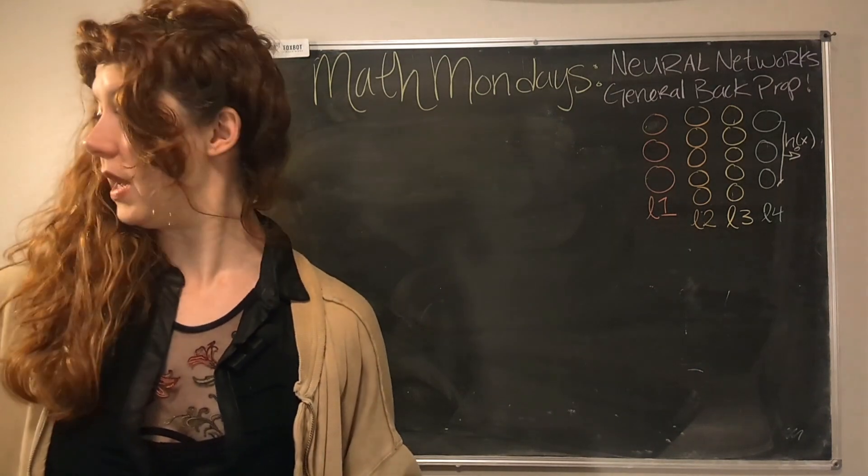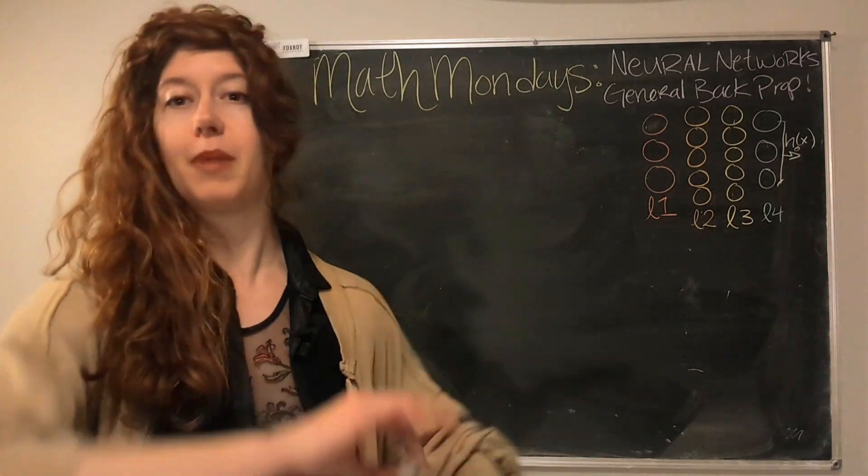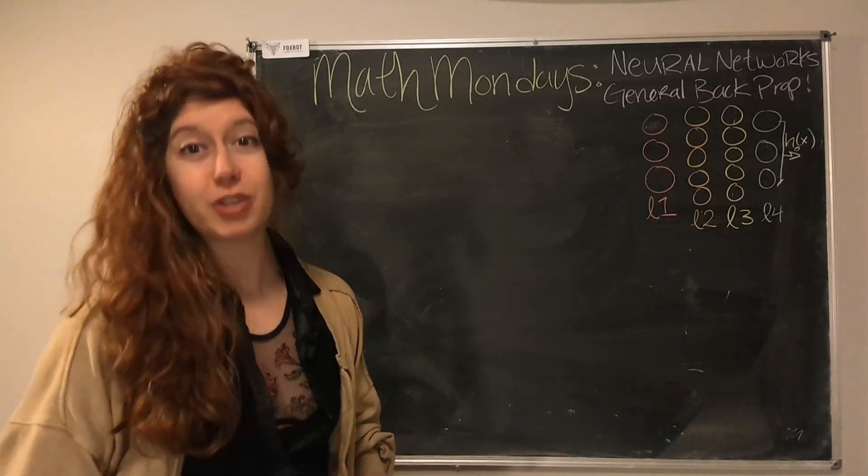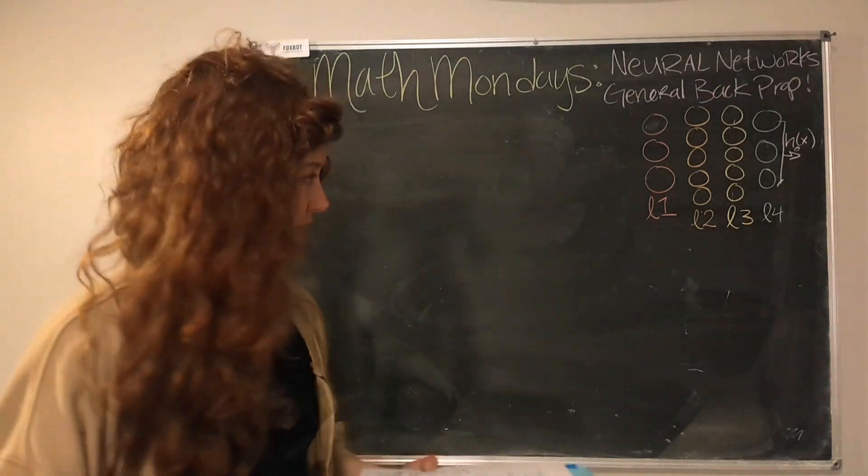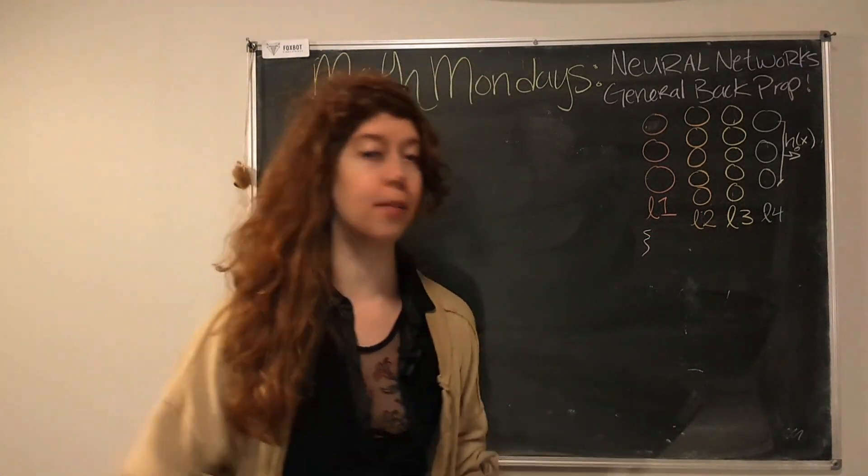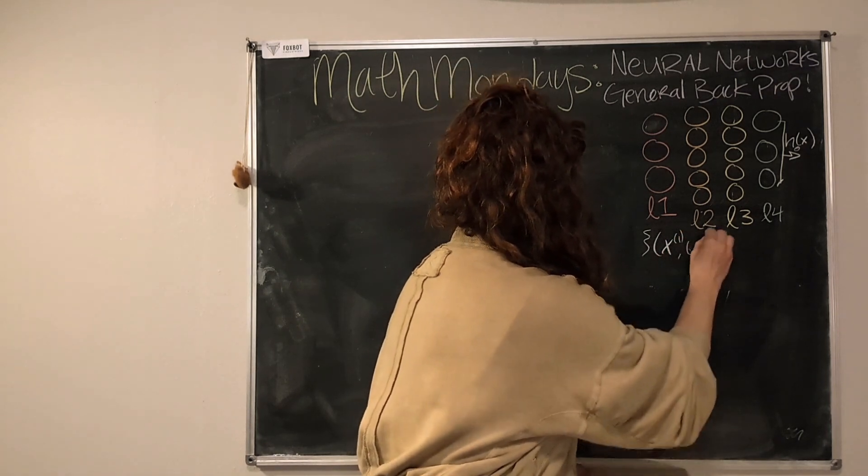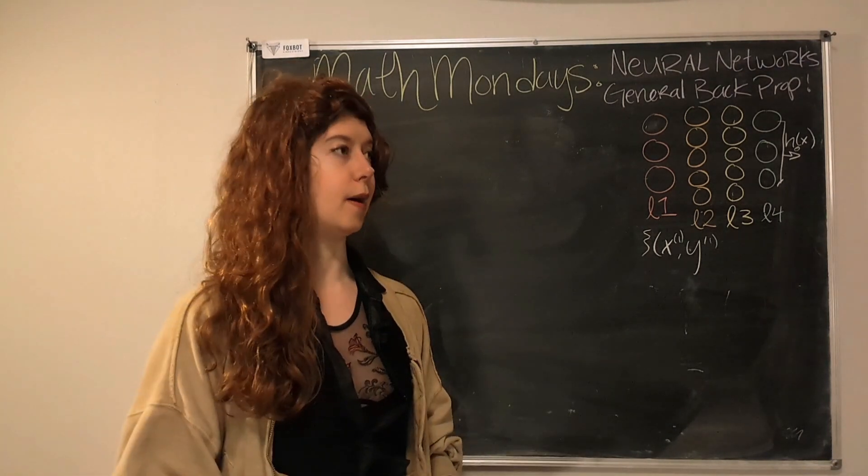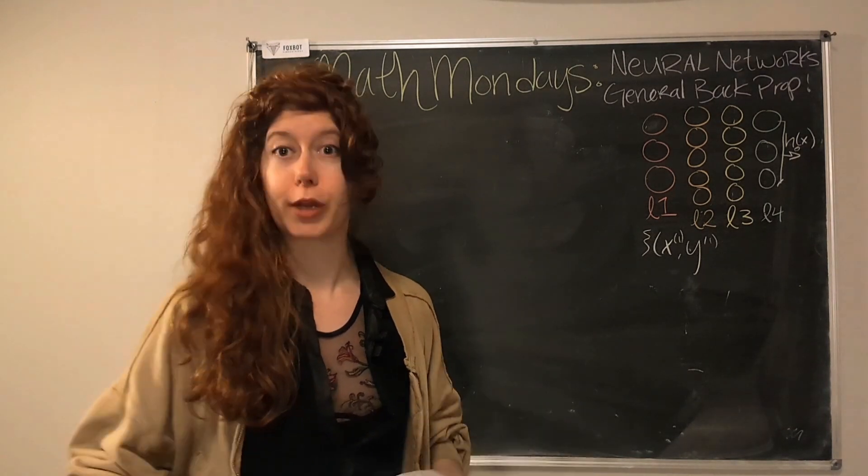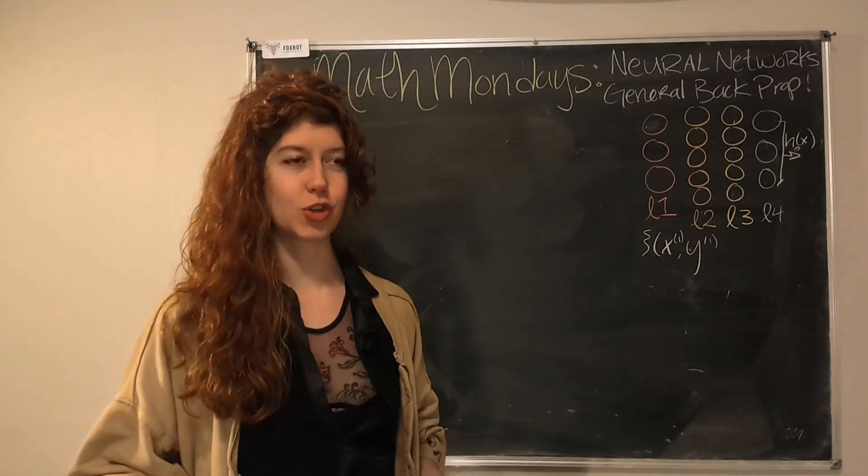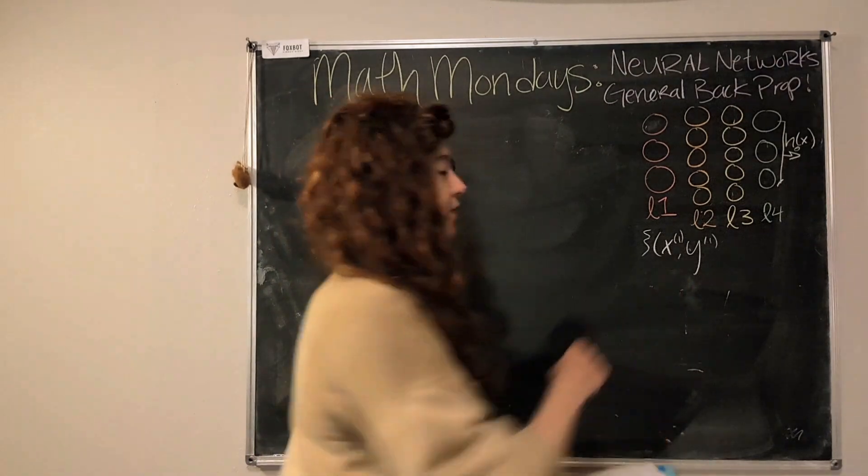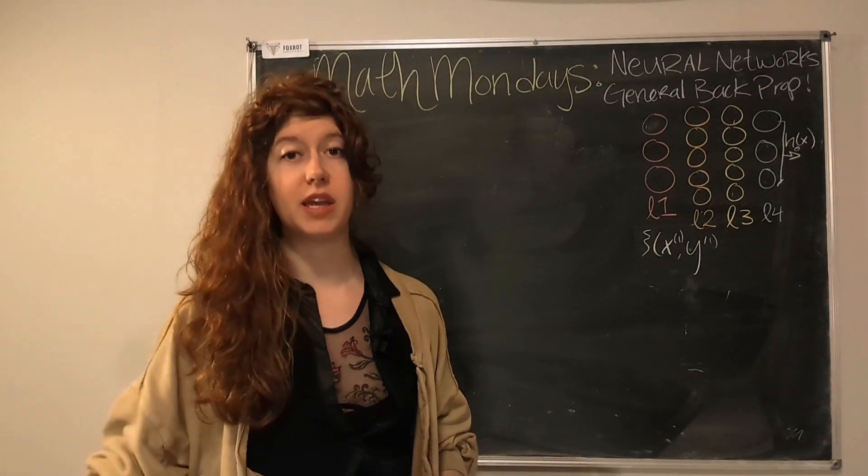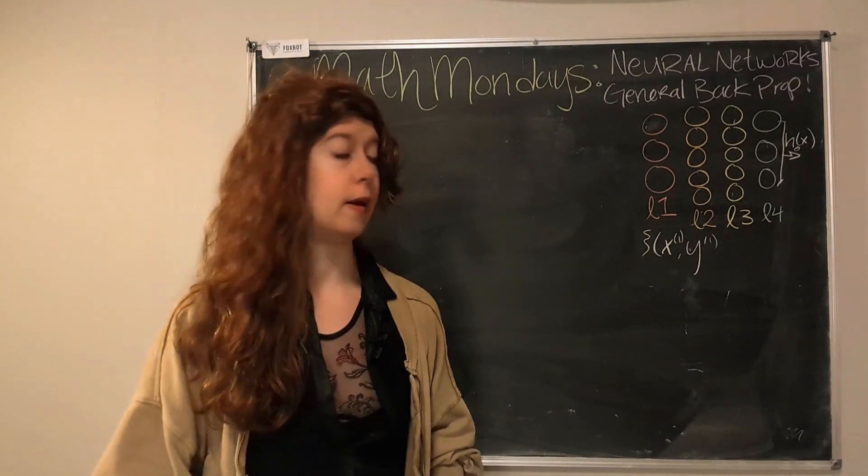For this, we are going to generalize our backpropagation for any given number of training examples. I'm going to write it over here, so I saved my whiteboard space. As you can imagine, to train a neural network, you need a lot of training data. So we need to generalize. Let's say we have m number of training data sets, which are represented by x's and y's, where x is our input data.